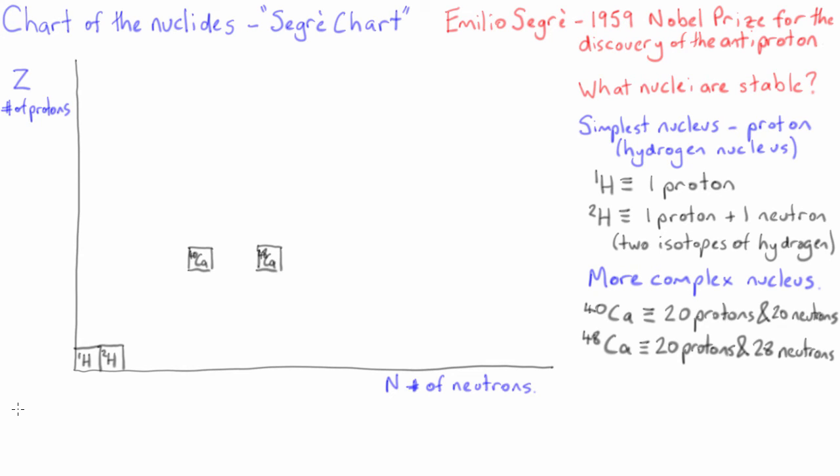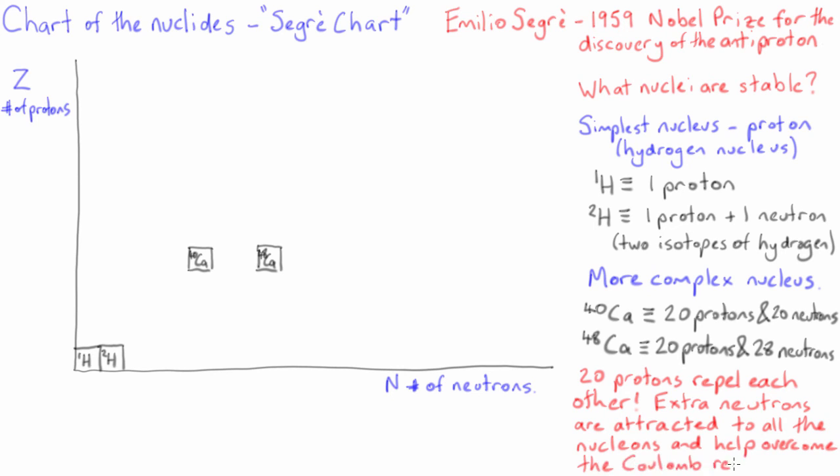You might ask why this nucleus can have so many extra neutrons. The reason is that the 20 protons all repel each other and try to break the nucleus apart. The presence of the extra neutrons allows the attractive strong nuclear force that acts between all the nucleons to hold the nucleus together.